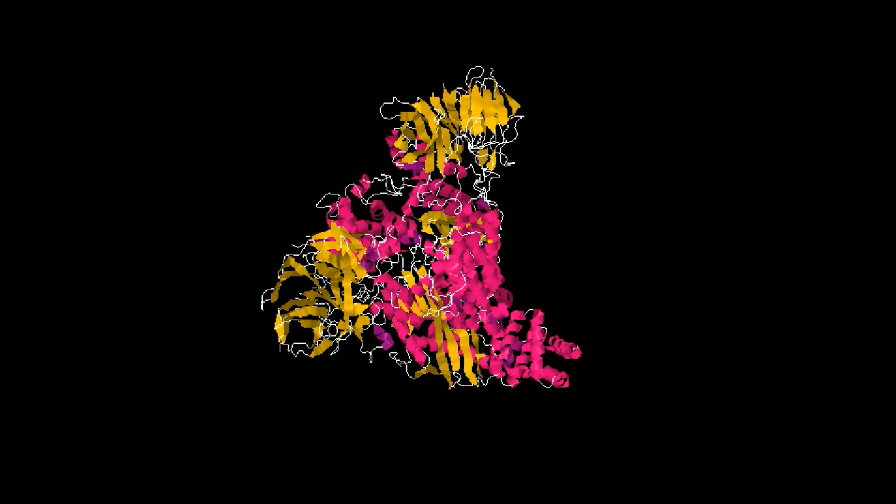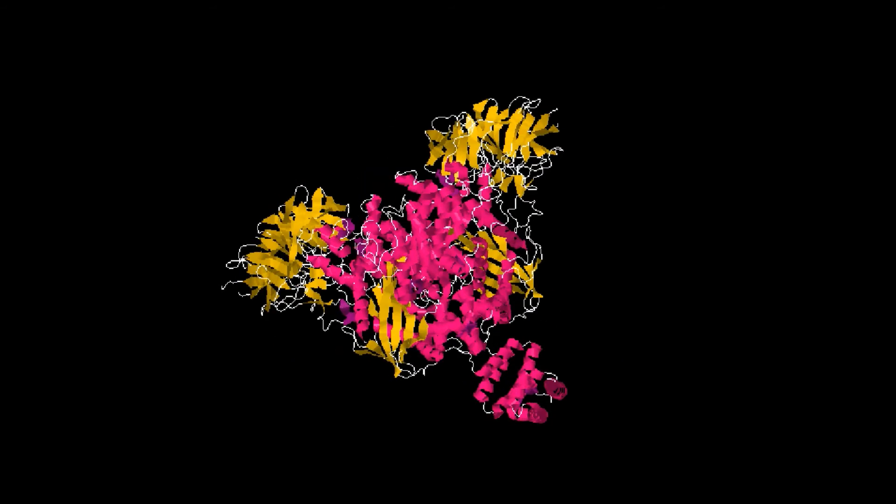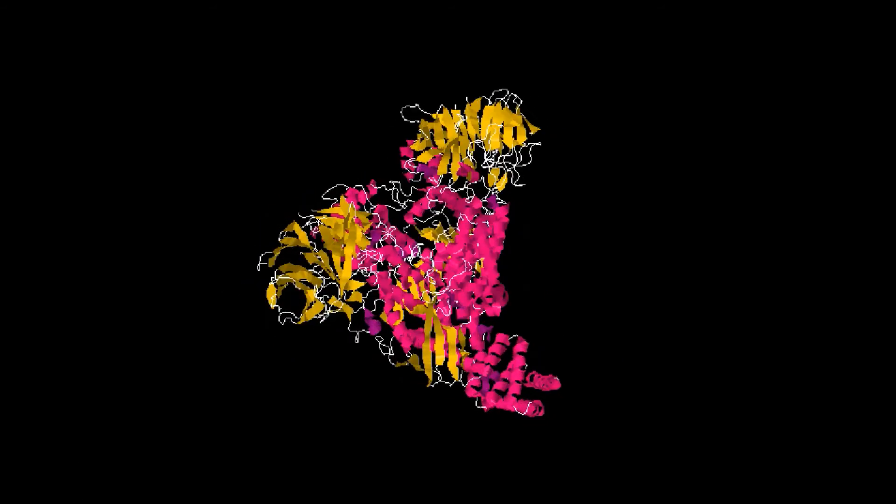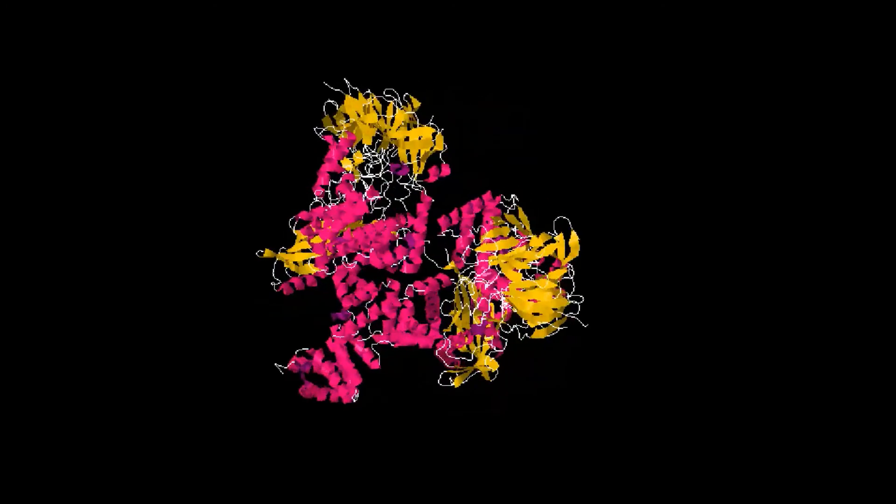The core region of RAG2 is predicted to form some kind of structure that resembles a six-bladed beta propeller that seems to be less specific than RAG1 for its target.